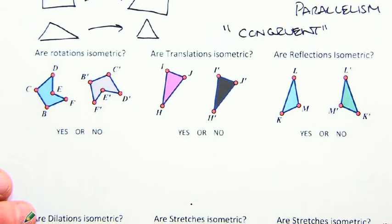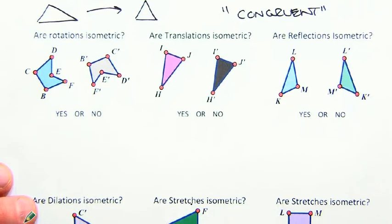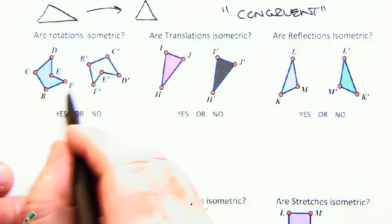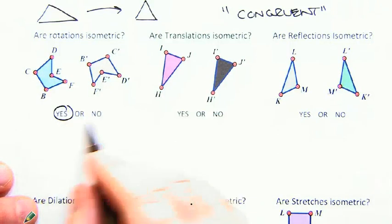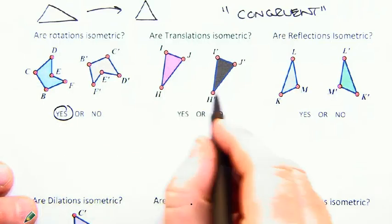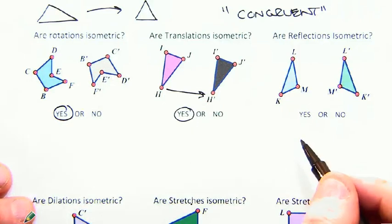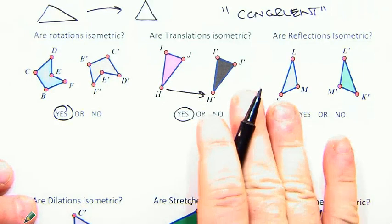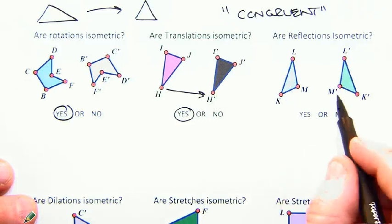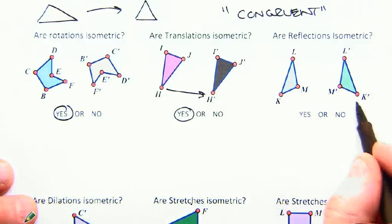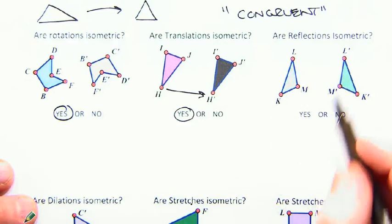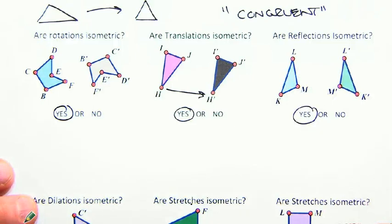So we look now at a couple of examples here. We see that we have a rotation, a translation, and a reflection. When we look at the shape, the distances all match up, the angles all match up. So rotation seems to be isometric. Translations, we see that nice little slide there, and we say yes, that would also be isometric. We see the reflection here and we notice that M and K and M and K and L and M are all equal and the angles are the same. So these are all examples of isometric.